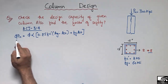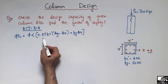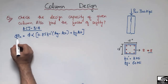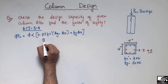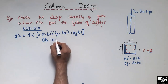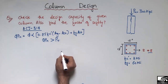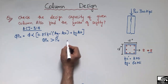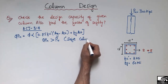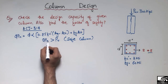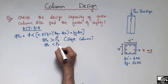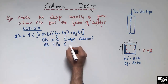This formula is used to find the design capacity of a reinforced concrete column. φPn is the design capacity; it should be greater than the demand Pu coming on the column — then our column will be safe. Otherwise, if φPn is less than Pu, the column will fail.